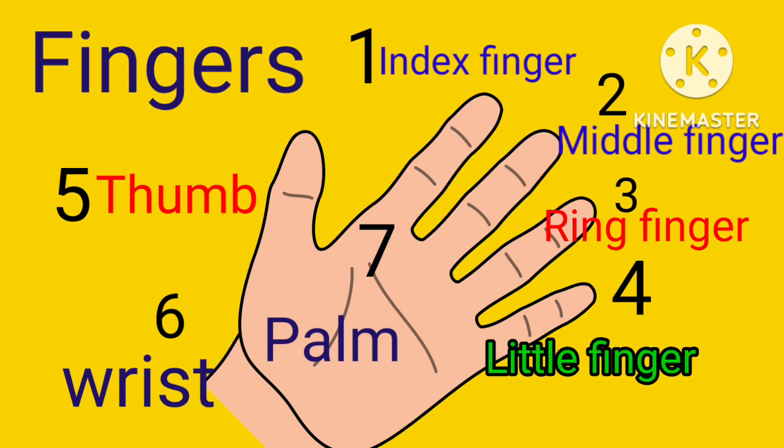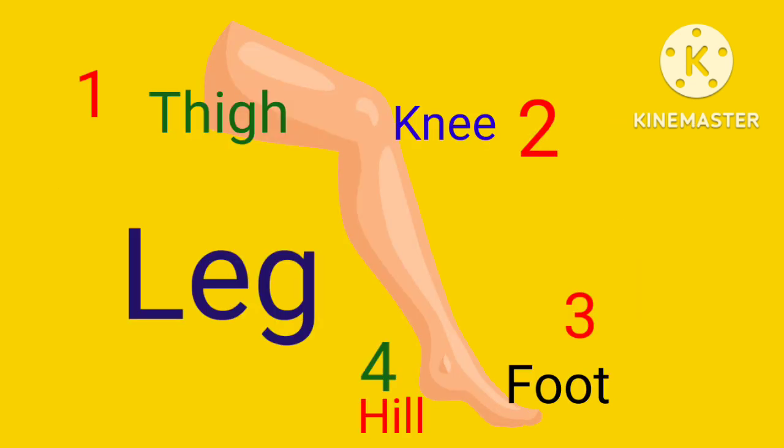Number five: Thumb. T-H-U-M-B. Thumb. Number six: Wrist. W-R-I-S-T. Wrist. Number seven: Palm. P-A-L-M. Palm.